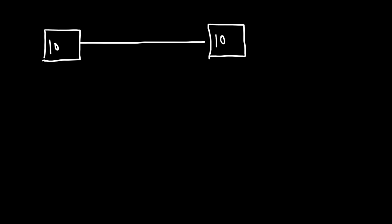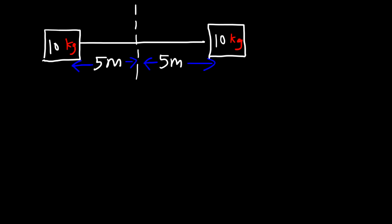Let's say we have a 10 kilogram block next to another 10 kilogram block, and these two blocks are separated by a distance of 10 meters. The axis of rotation is placed at the center of mass of the system, so each block is 5 meters away from the axis of rotation. What is the inertia of this system?